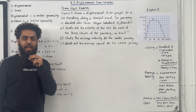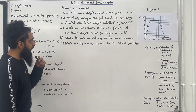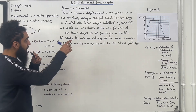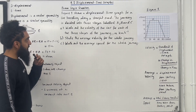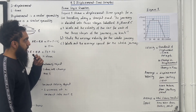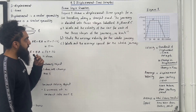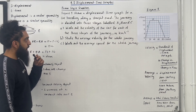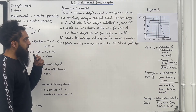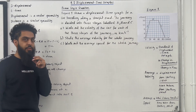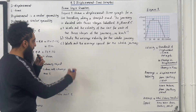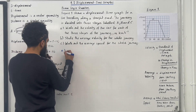Let's have a look at the exam-style question. Figure 1 shows the displacement-time graph for a car travelling along a straight road. The journey was divided into three stages labelled A, B and C. Part A: work out the velocity of the car for each of the three stages of the journey in kilometres per hour.